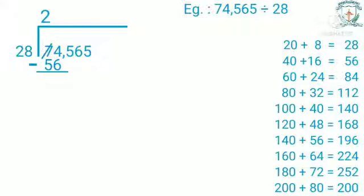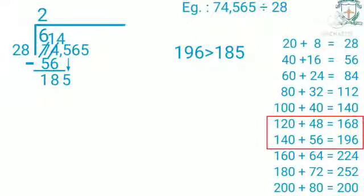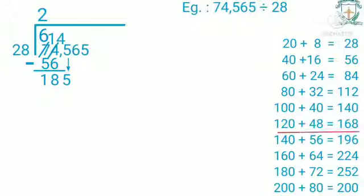7 becomes 6 and 4 becomes 14. 14 minus 6 is 8; 6 minus 5 is 1. Now bring down the digit 5 to get the new dividend 185. Let us divide 185 by 28. We have 168 and 196; since 196 is greater than 185, we take 168 — that is, 28 sixes are 168. Write 6 in the quotient's place and write 168 below 185 and subtract. We cannot subtract 8 from 5, so we need to borrow from the next digit.